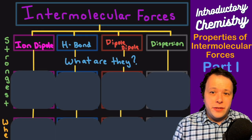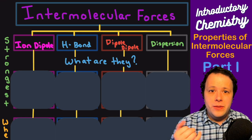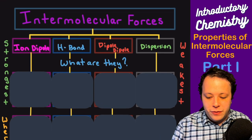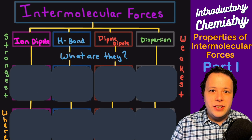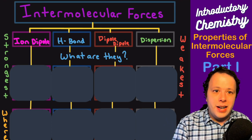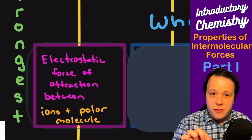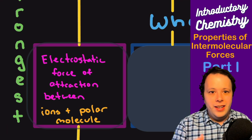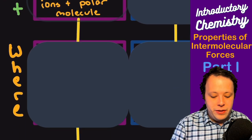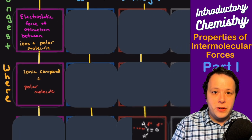Looking at the four types of intermolecular forces: ion-dipole, hydrogen bonding, dipole-dipole, and dispersion forces. We go from strongest to weakest. Ion-dipole is an electrostatic force between an ion and a polar molecule. This happens whenever you have an ionic compound mixing with a polar molecule.